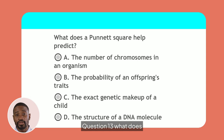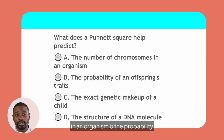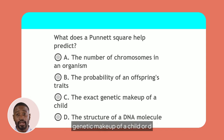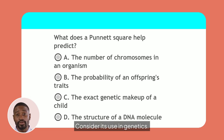Question 13. What does a Punnett square help predict? Is it A. The number of chromosomes in an organism, B. The probability of an offspring's traits, C. The exact genetic makeup of a child, or D. The structure of a DNA molecule? Consider its use in genetics.